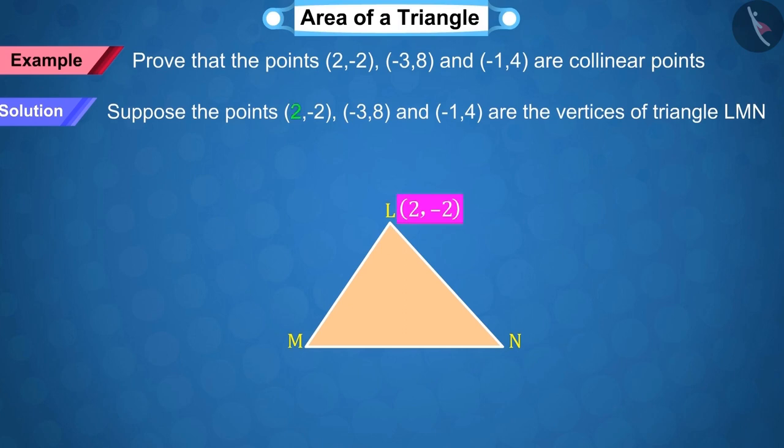Suppose that the points (2, -2), (-3, 8) and (-1, 4) are vertices of triangle LMN, which are represented as follows: point L has coordinates X₁ = 2, Y₁ = -2; point M has coordinates X₂ = -3, Y₂ = 8; and point N has coordinates X₃ = -1, Y₃ = 4.